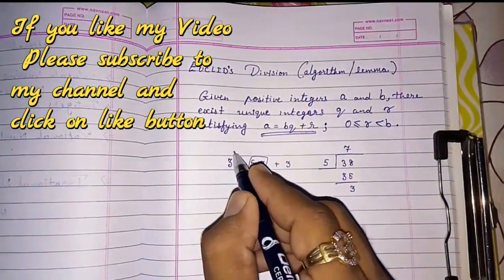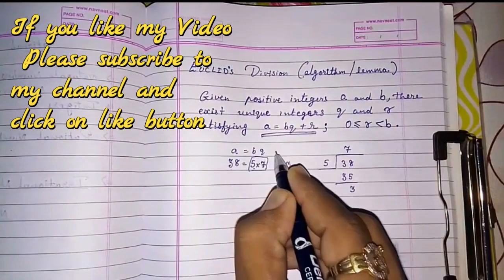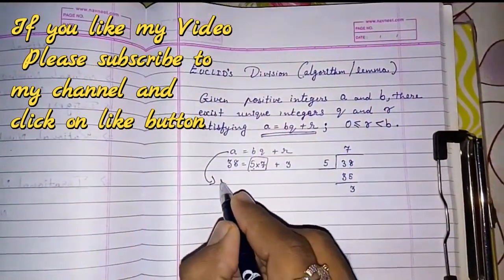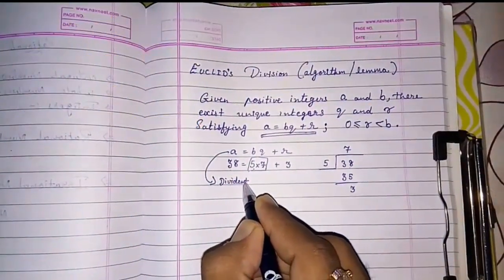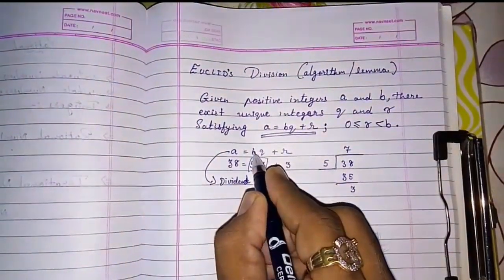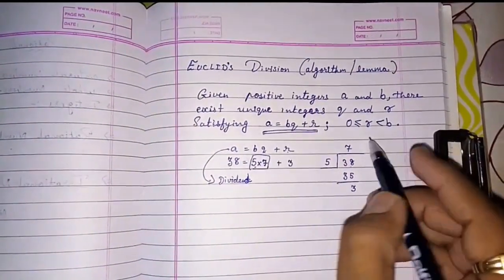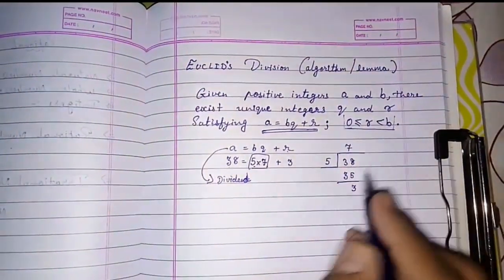A, this is a, b, q plus r. A means dividend, b divisor, q quotient, r remainder. Now what about remainder? This is one more important thing that I want to tell you. Remainder.